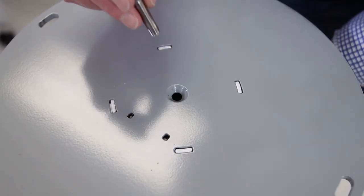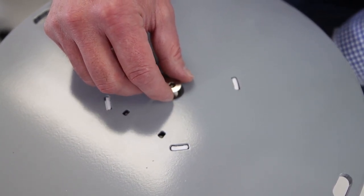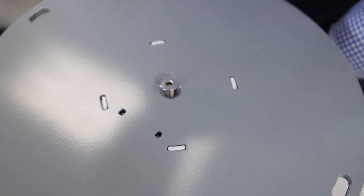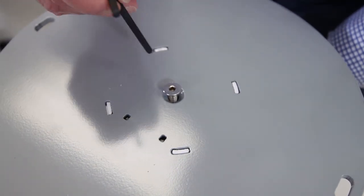Now we take our bolt, we drop it into the hole and it goes into the cross beam. Next we take our allen key.